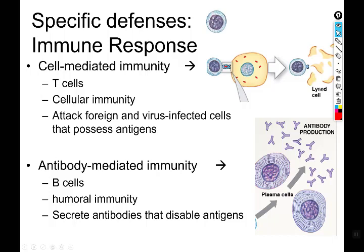We have two categories of specific defenses: cell-mediated versus antibody-mediated. Cell-mediated immunity is cell-on-cell violence directly — one cell coming up to another and directly attacking it. Antibody-mediated immunity is the production of antibodies against a particular pathogen, and those antibodies either directly destroy or tag for destruction the pathogen of interest. Both kinds are carried out by lymphocytes, but different kinds: cell-on-cell violence is done by T cells, and antibody-mediated immunity is done by B cells.